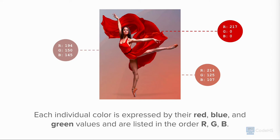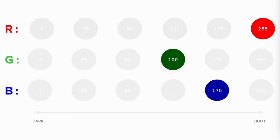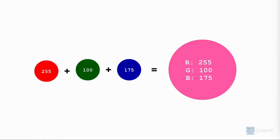Each color has a red value ranging from 0 to 255, a green value ranging from 0 to 255, and a blue value ranging from 0 to 255. Those values are put together to generate a single color. Let's see what happens when we mix a color with a red value of 255, green value of 100, and a blue value of 175. Voila! The generated color is a shade of pink.